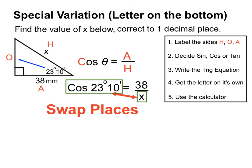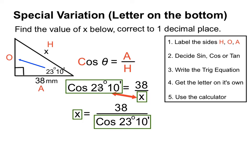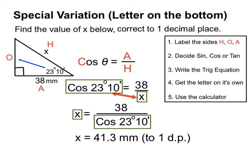To get the letter on its own when x is on the bottom, we use a shortcut: we swap places — x goes where the cos was, and the cos bit goes underneath where x was. This gives us x equals 38 divided by cos 23 degrees 10 minutes. On the calculator: type 38, press divide, then cos 23, degrees button, 10, degrees button again, then equals. We get 41.3 millimetres rounded to one decimal place.